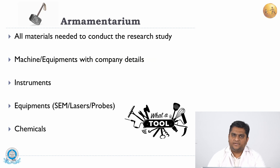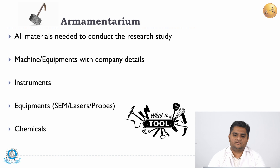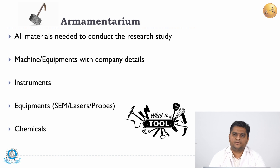Whatever armamentarium is going to be used in the study must be listed. Machines and equipment with company details must be mentioned, as well as instruments — any equipment such as SEM, lasers, or probes. Mention the company name, version if available, and any chemicals to be used along with the company from which they will be procured and the material details.